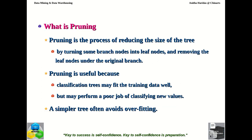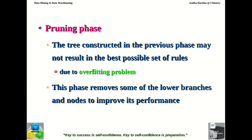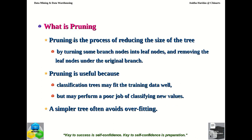We need to understand what pruning is and what the overfitting problem is. Pruning is the process of reducing the size of the tree by turning some branch nodes into leaf nodes and removing the leaf nodes under the original branch. So some branch nodes are converted into leaf nodes and their sub-leaf nodes are removed. This is how the pruning process is done.